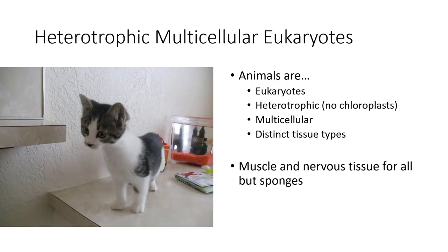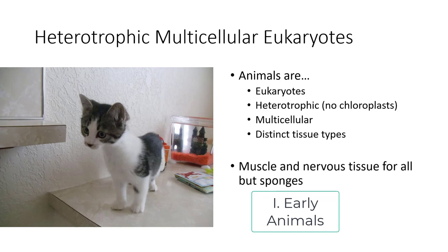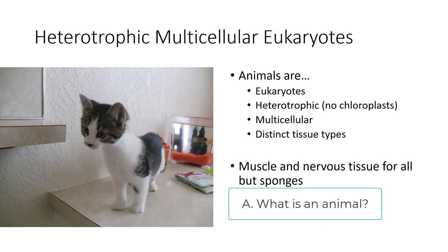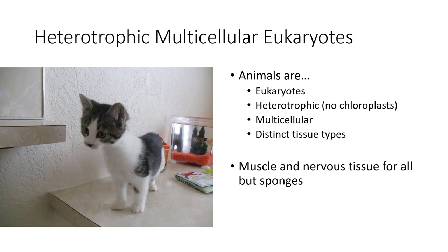So what are animals? Animals are heterotrophic, multicellular eukaryotes. They're not fungi. So we know they're eukaryotes — so are fungi. They're heterotrophic — so are fungi. They're multicellular — so are fungi. But they have distinct tissue types, and there we got them. Fungi don't have distinct tissue types, so we're going to focus on the tissues when we're looking at animals.